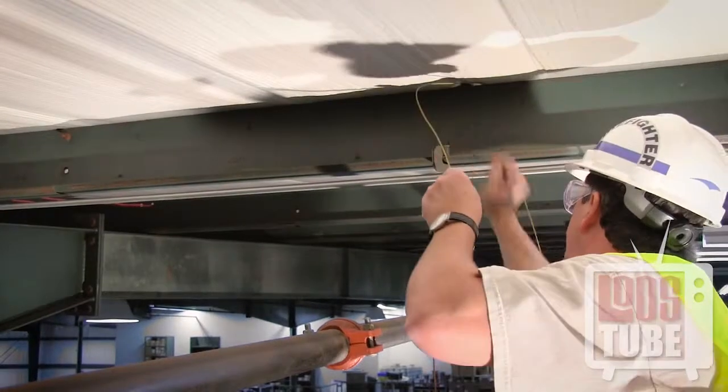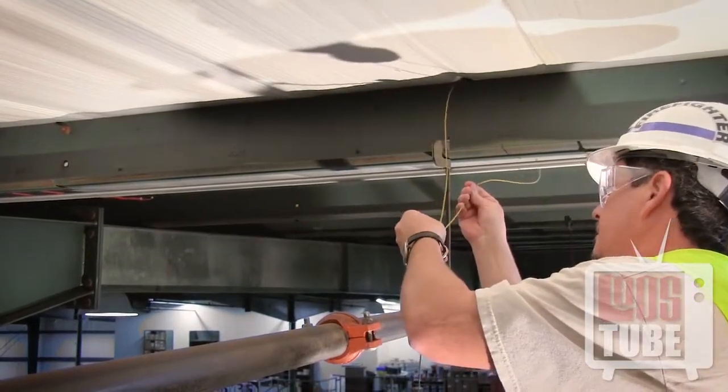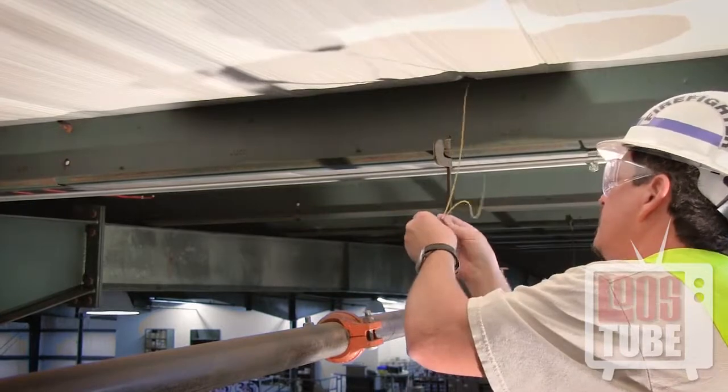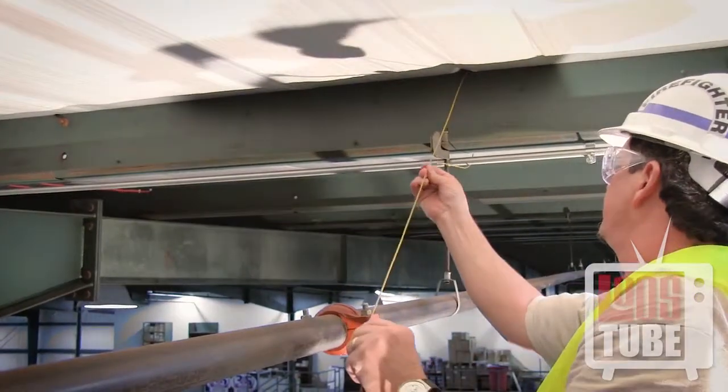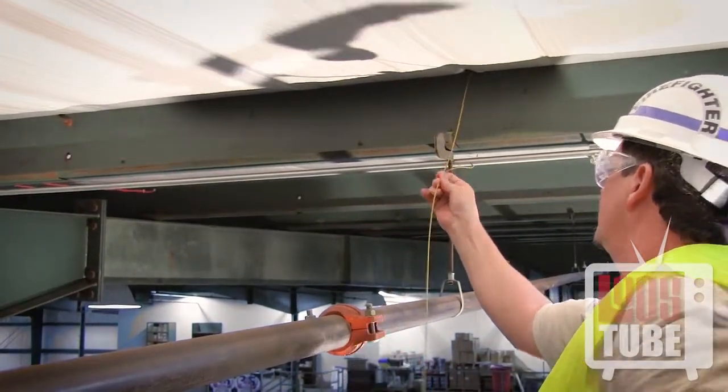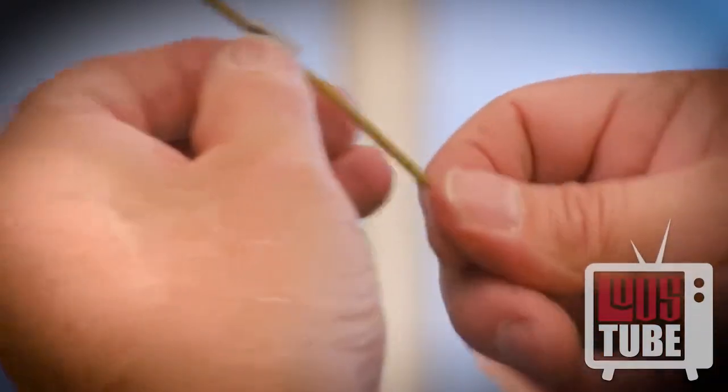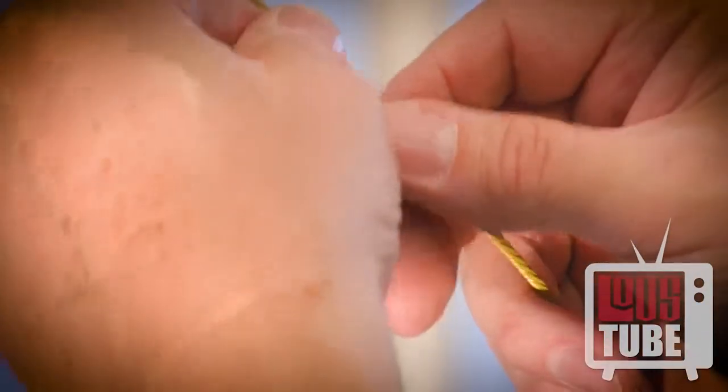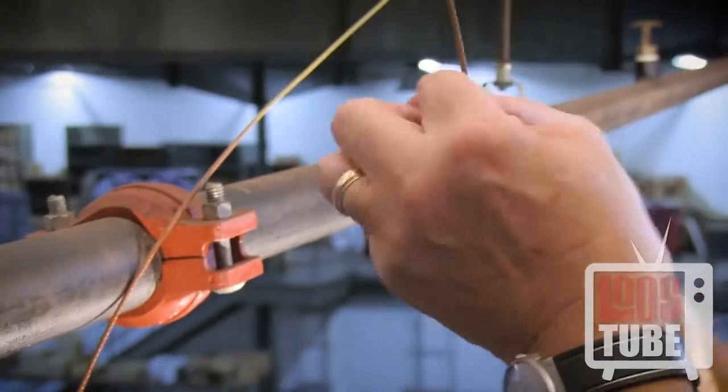Once the cable is properly attached to the structure, you may begin the attachment to the pipe. The cable should be aligned parallel to the pipe. Insert your oval sleeve onto the free end of the cable. Slide the sleeve up the cable to allow working room.